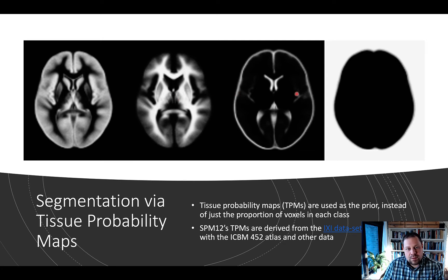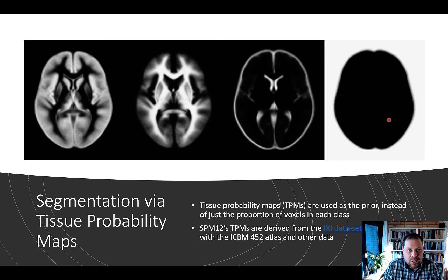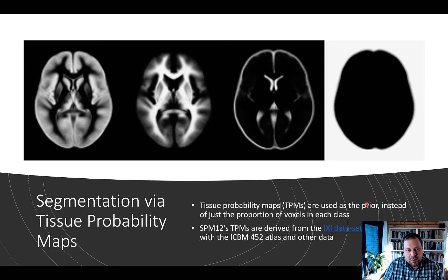There are three more tissue probability maps that SPM uses, including skull, soft tissue, and everything outside the brain. It identifies these different classes of tissue types and simultaneously transfers the image into normalized space. This is a unified model where the TPMs are used as priors in Bayesian statistics, giving improved normalization outcomes. They're derived from a large dataset, namely the ICSI dataset using the ICBM 452 atlas.